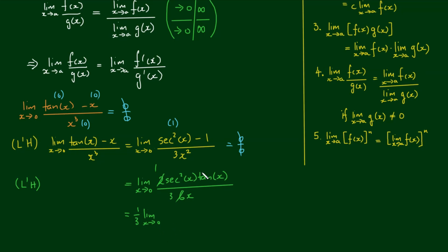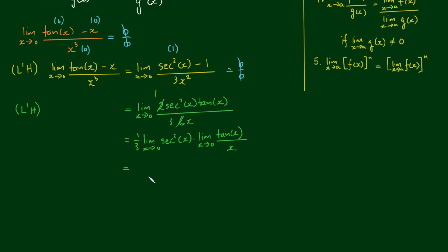So we have one third times the limit as x approaches 0. Using limit law 3, I can evaluate the limits separately: the limit of sec²(x) times the limit of tan(x) over x. I'll group tan(x) and the x on the bottom together. I can write tan(x) as sin(x) over cos(x), leaving 1/x on the bottom, then break these into separate limits.